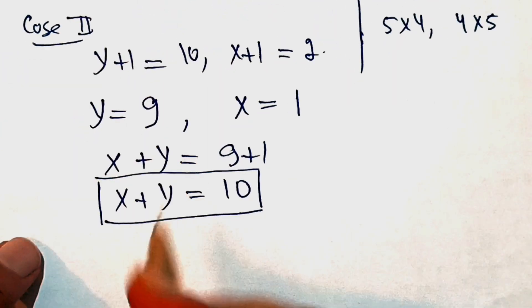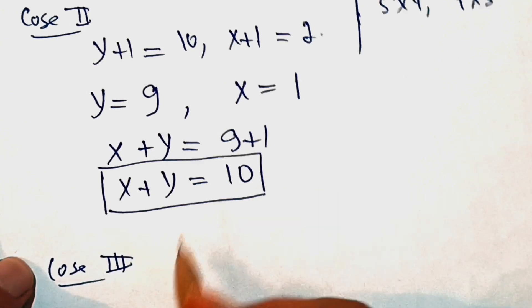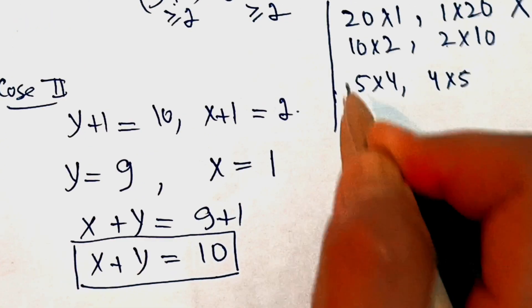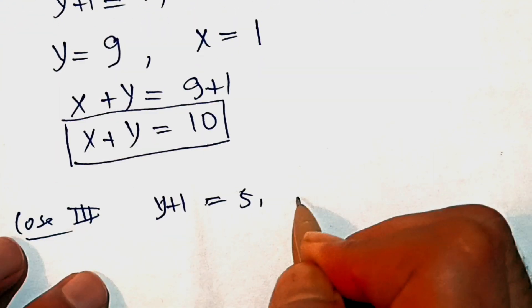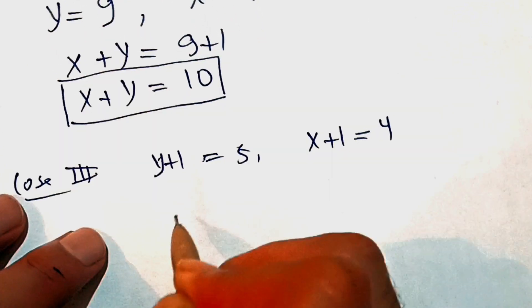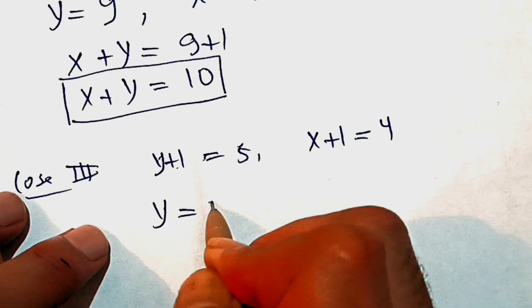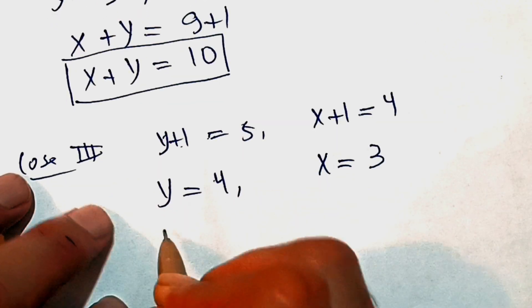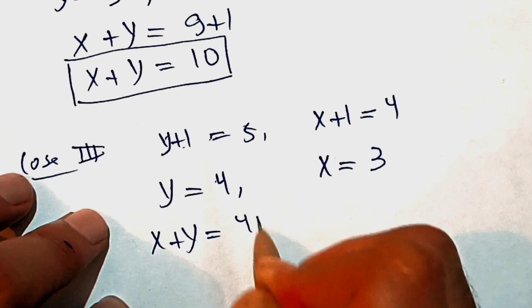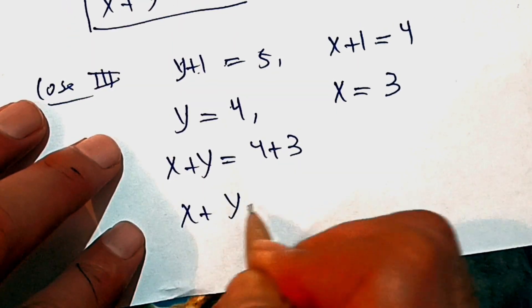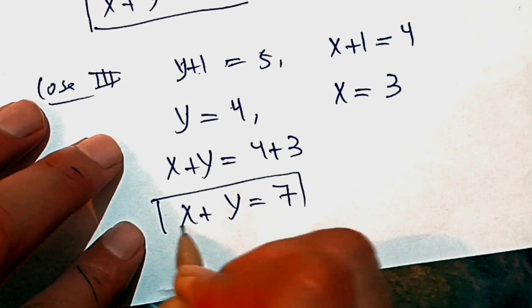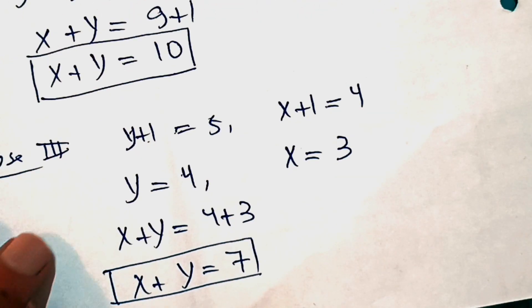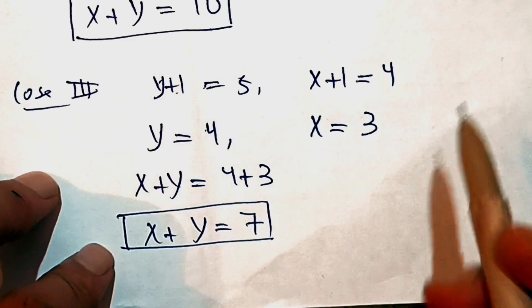Case 3: y plus 1 equals 5 and x plus 1 equals 4. That means y equals 4 and x equals 3. So x plus y equals 4 plus 3, which is 7. The same result holds when we take y plus 1 as 4 and x plus 1 as 5.